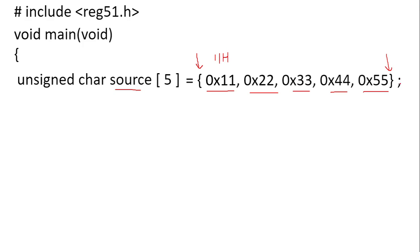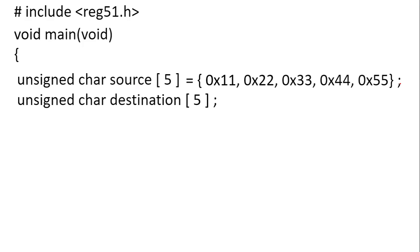One more array is required — the destination array. I will declare another array named 'destination'. The data type is again unsigned character and the size is also 5, since these same five numbers are to be copied into destination. It is not initialized with any values, because after execution these five locations will receive the copied data from source.